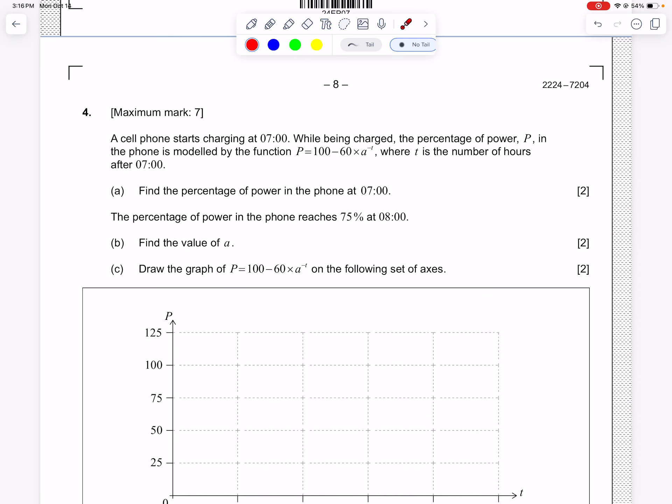Let's get started. Here we have a cell phone and it's charging. We start charging it at 7 o'clock and this is the function that shows how that cell phone is charged. t is our variable and t means time, so when you have a variable in the exponent that's telling you that's an exponential function.